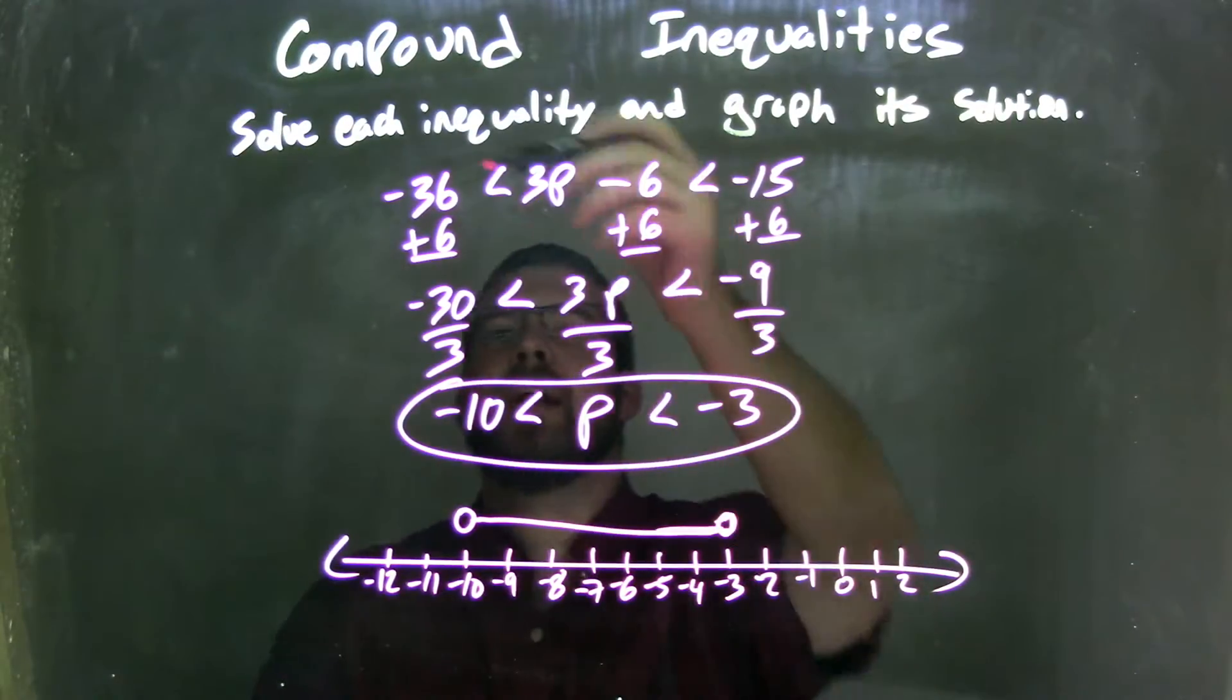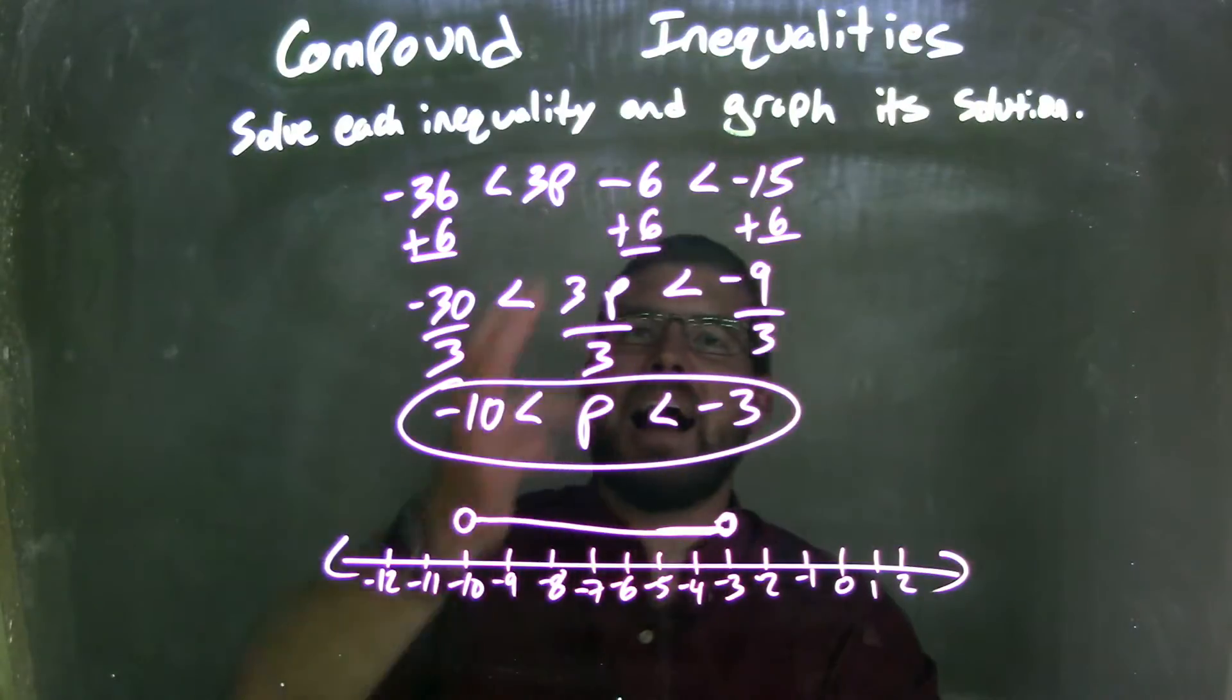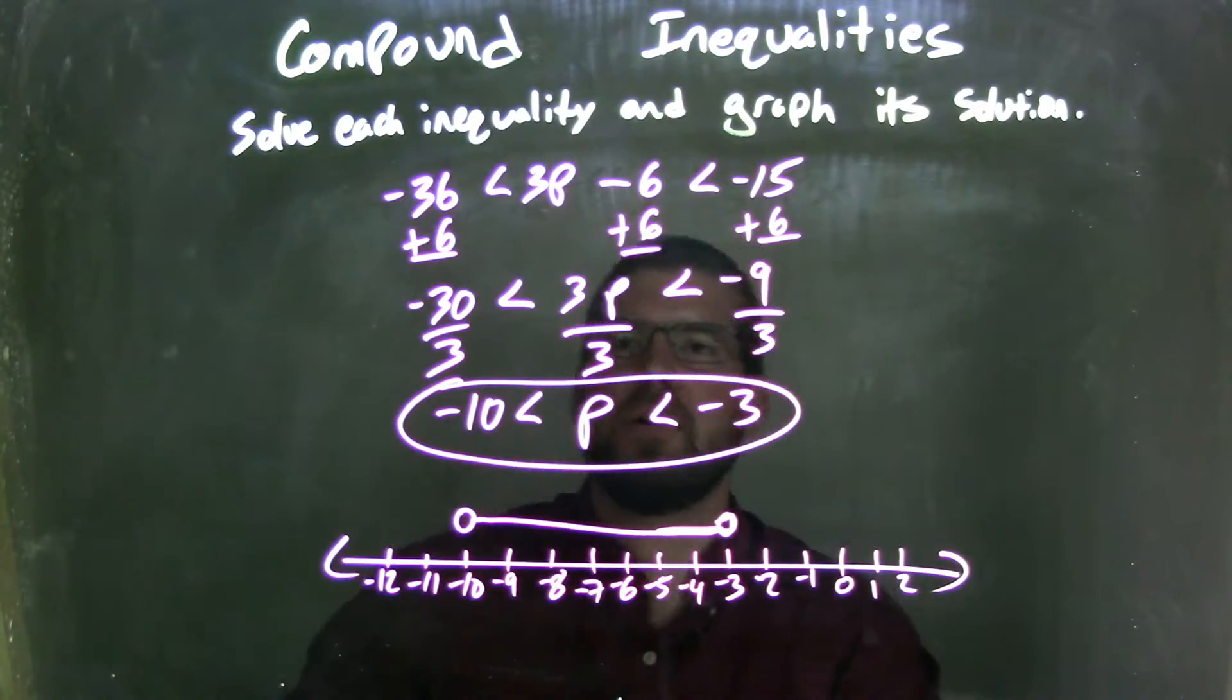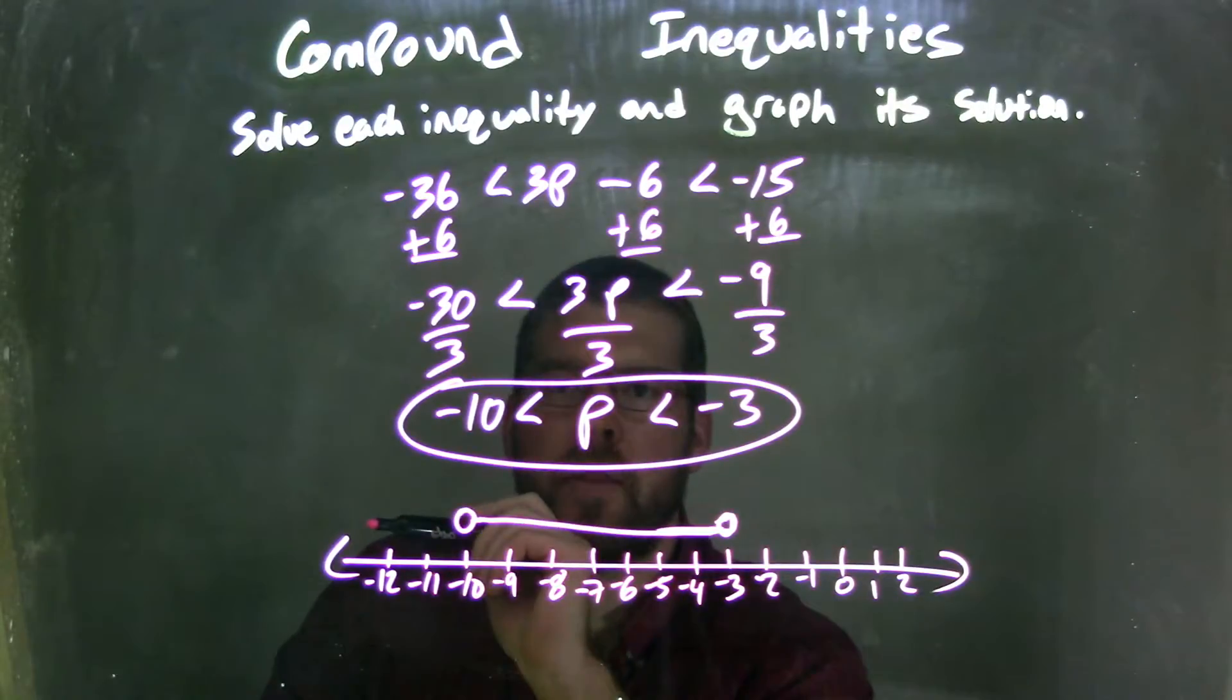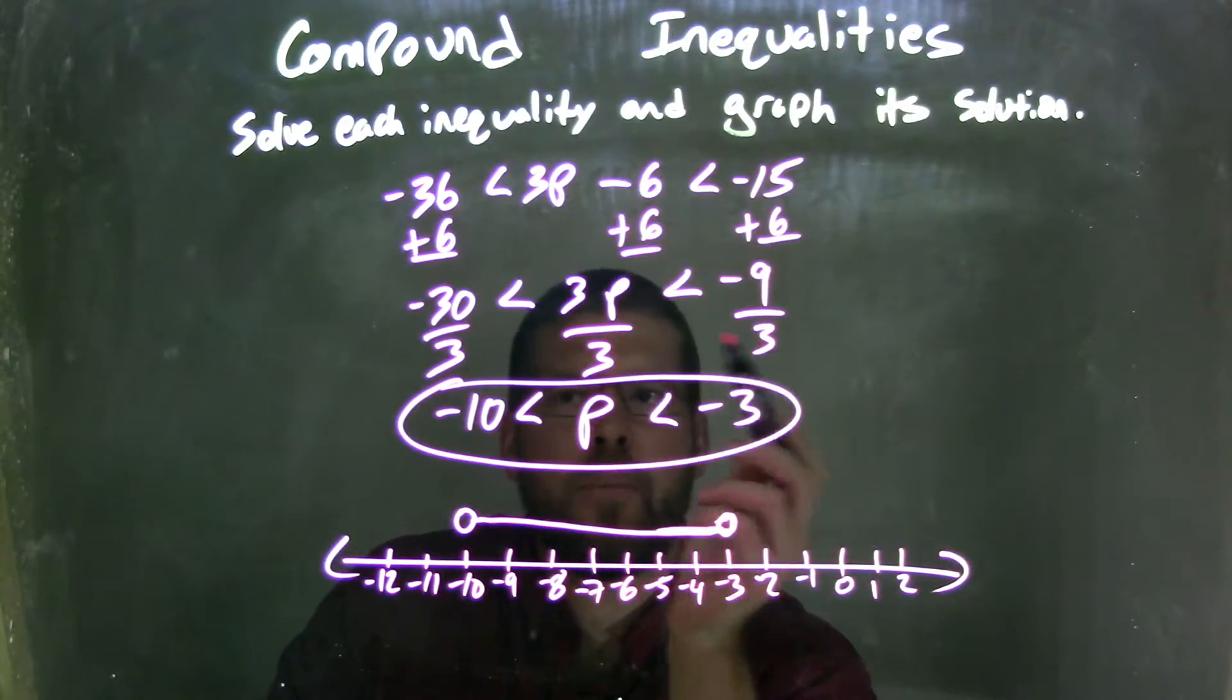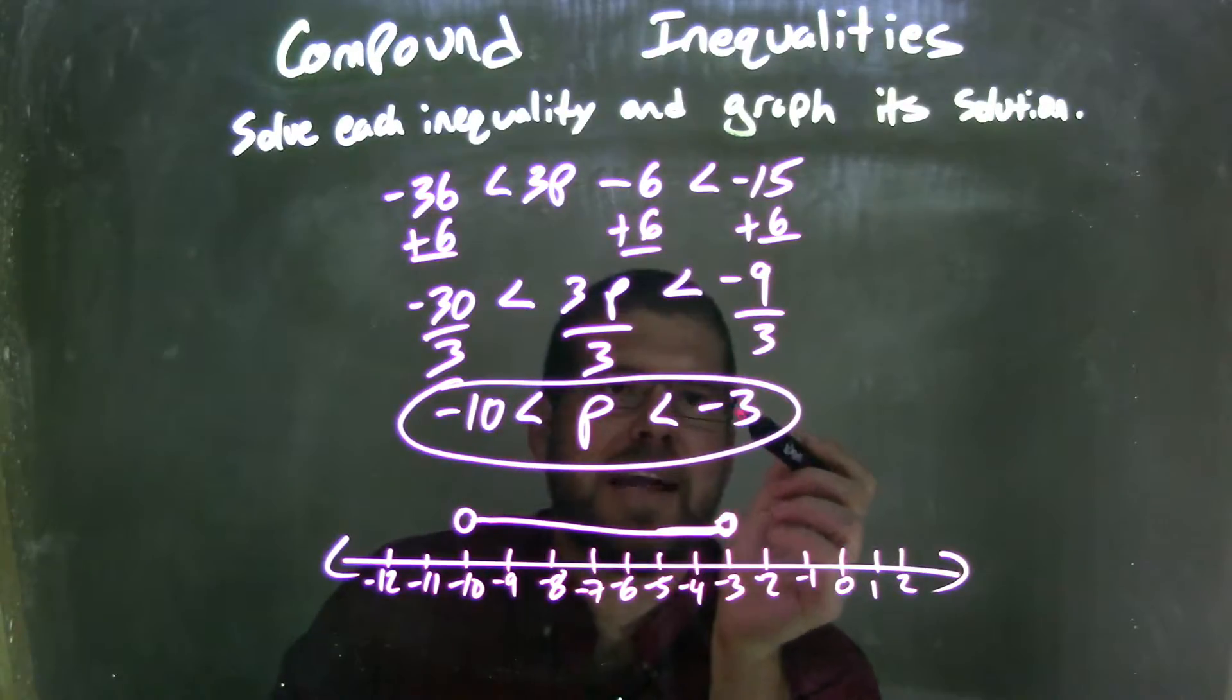So let's recap. We're given negative 36 is less than 3p minus 6, which is less than negative 15. I add a 6 to all parts here, giving me 3p by itself in the middle, negative 9 on the right, negative 30 on the left. I then divide by 3 to all parts, giving me negative 10 is less than p, which is less than negative 3.